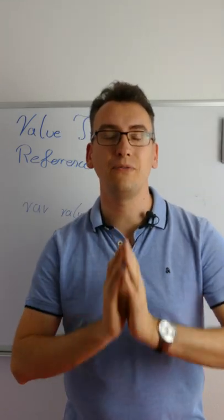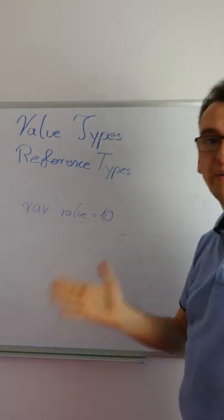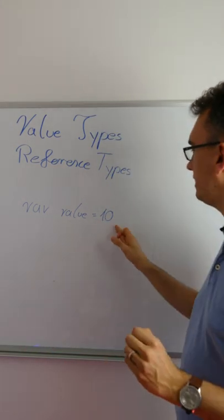Alright, let's begin with an example for value types. We have a variable value which is 10. Very easy. We directly know that 10 is the value of value.